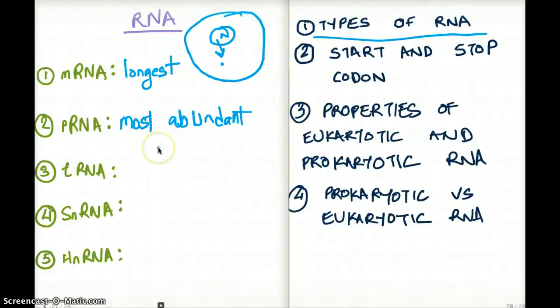rRNA, ribosomal RNA, is the most abundant. They are either found free in the cytoplasm or they're found on the body of the endoplasmic reticulum and we call them rough endoplasmic reticulum. They're the most abundant and they're the sites where protein translation happens.